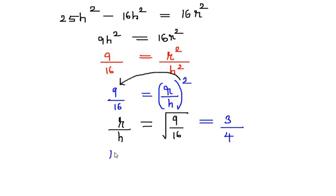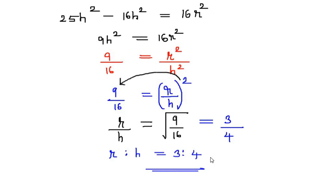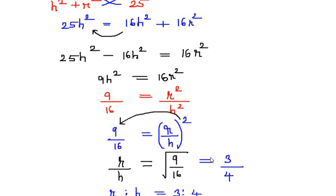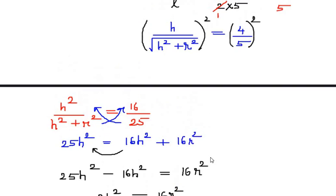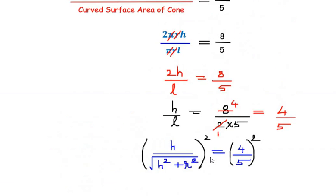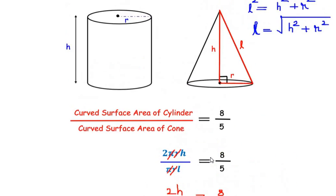So the final answer is r:h = 3:4. I hope you understood all the steps. If you know any other way of solving this example, do comment below. If you are liking my videos, please like, share, and subscribe to my channel. Thank you for watching.